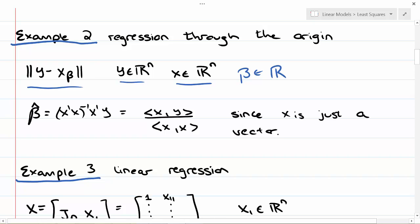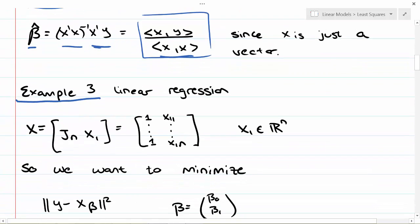Let's verify that our least squares result returns the same result we got when we developed regression through the origin directly. Our beta-hat is (x transpose x)^(-1) x transpose y. Well, x transpose x inverse is just the inner product of x with itself in the denominator, and x transpose y is the inner product with x and y. This formula is the same as when we did regression through the origin by itself.